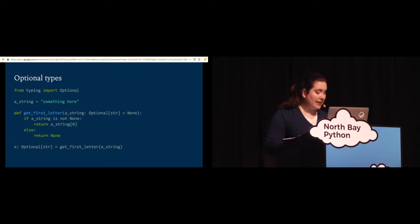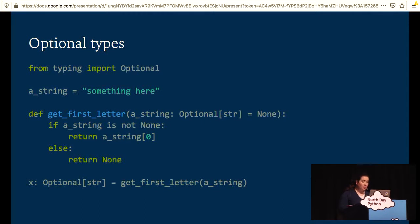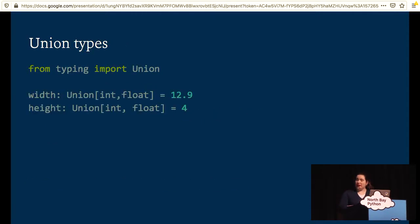Next, I have optional types. They allow you to annotate functions that return either a typed variable or none. And union types, which allow variables to have different types depending on the situation. For instance, you can have these dimensions, which allow both integers and floats, but not any other type.